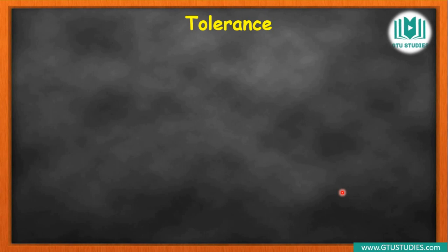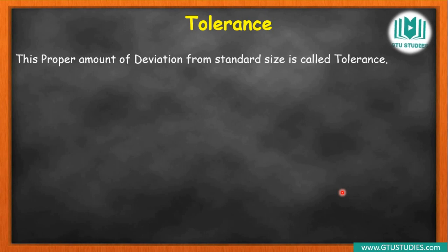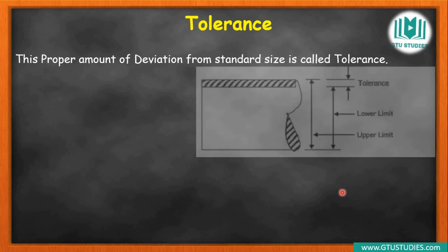So that perfectly defined deviation is called tolerance. The least amount that is tolerated — for example, if the basic size is 56 mm, the upper limit is 56.05 mm and the lower limit is 55.95 mm. That range is what we understand as tolerance.